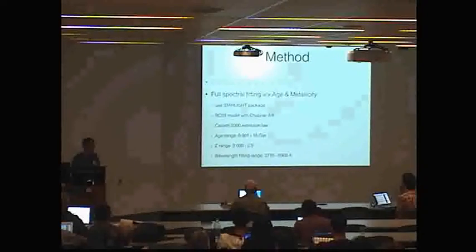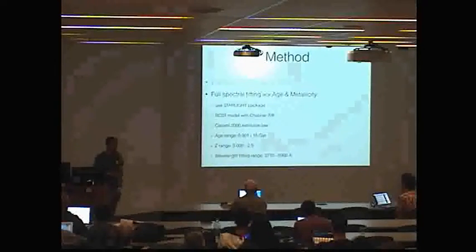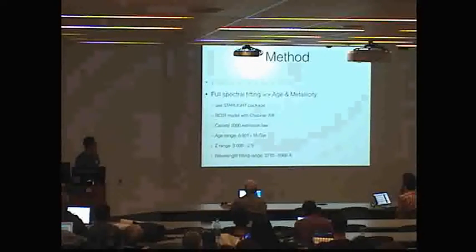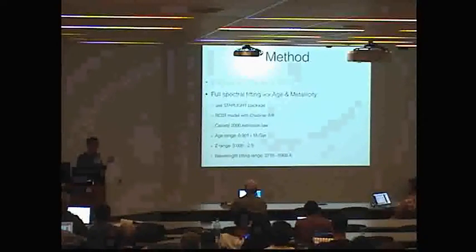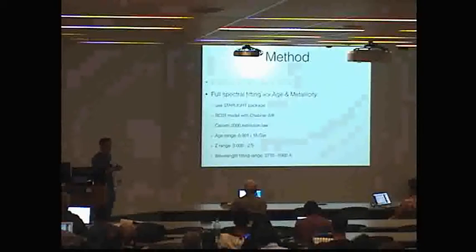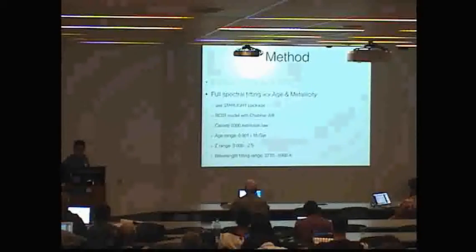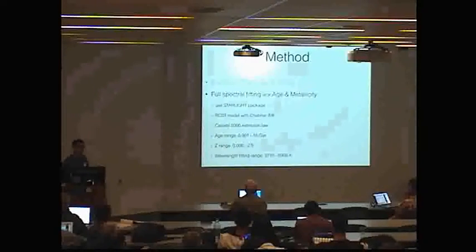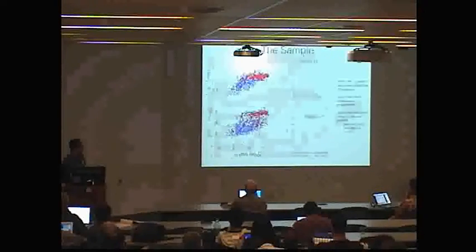So the other thing we need is the stellar metallicity and age. We do this using full spectra fitting using one of the generally used starlight package. So we do the fitting using these parameters. After the full spectra fitting, we can get stellar age, stellar mass, metallicity and also extinction. So after we get that, I will show you the results later. So we can have a map of the age and metallicity, and then we can derive the gradients and see the correlation with the environments.